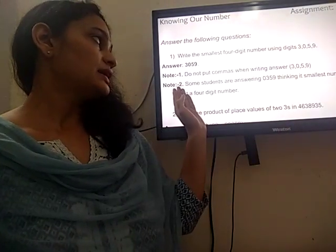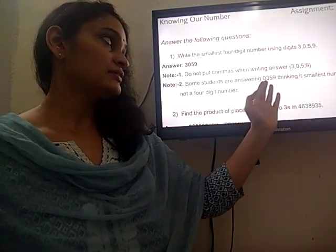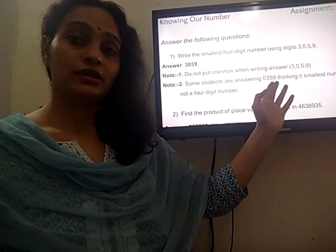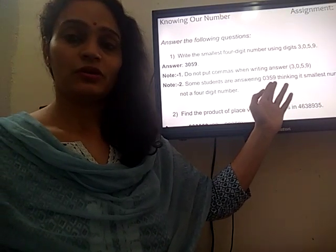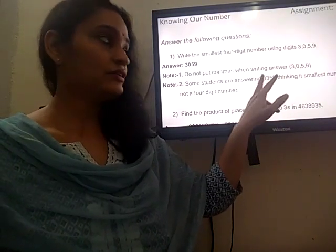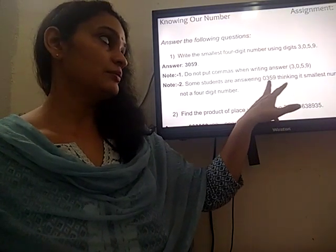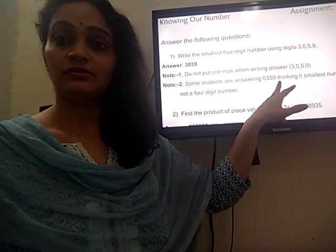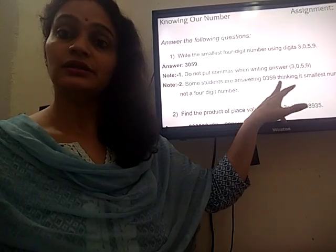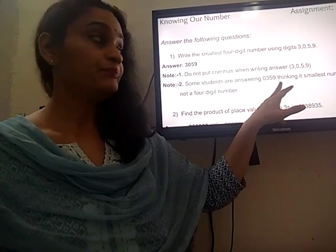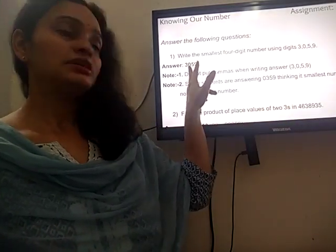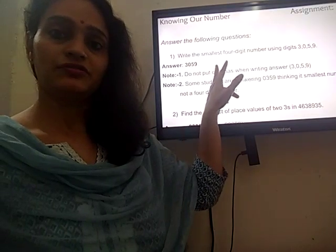Secondly, some students are answering it as 0359, which is not a 4-digit number. It is a 3-digit number — 359 will become the 3-digit number. So the correct answer is 3059.